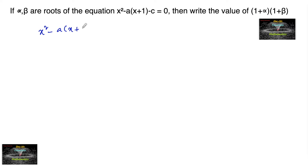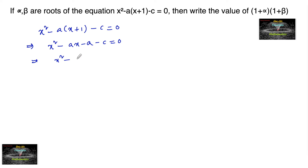If alpha, beta are the roots of the equation x² - ax + (1 - c) = 0, find the value of (1 + alpha)(1 + beta). We can rewrite this quadratic equation as x² - ax - (a - c) = 0, or x² - ax + (-a - c) = 0.